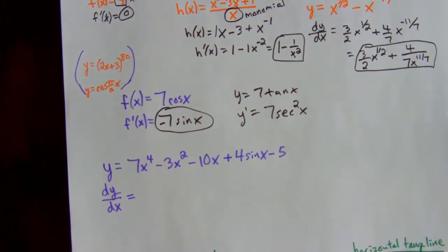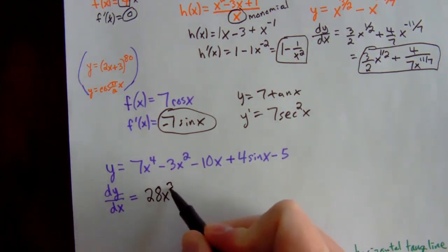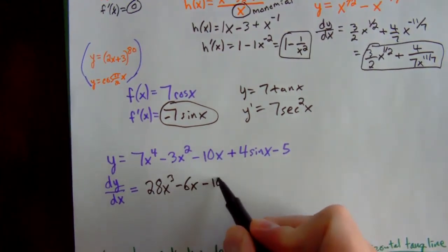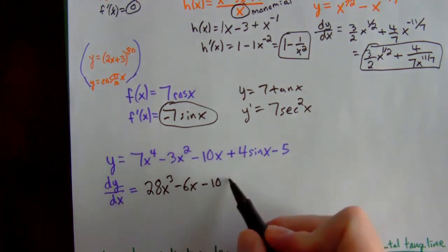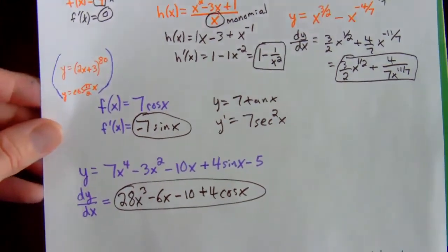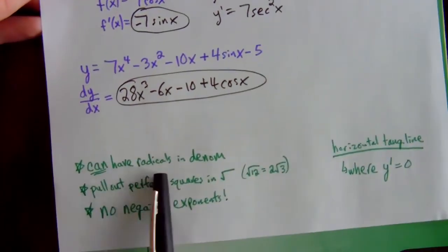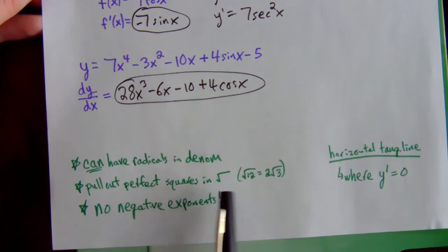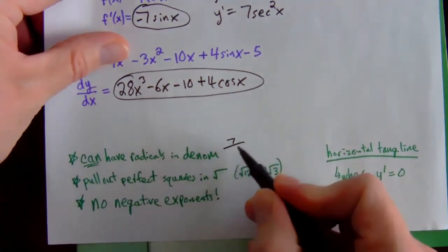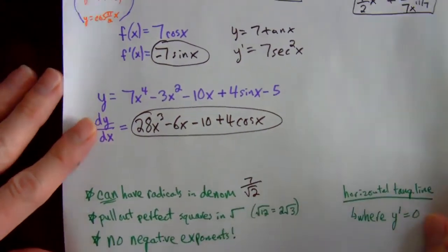When terms are separated by plus and minus signs, you just do each one separately — unlike products and quotients. Get ridiculously fast at this without even thinking: multiply by the power, decrease the power by 1, multiply by the power, decrease the power by 1. The derivative of a number times x is just that number. The derivative of sine is cosine — check your list if unsure. The derivative of a constant is 0.